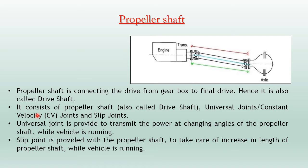It consists of the propeller shaft (drive shaft), universal joints, constant velocity joints (also called CV joints), and slip joints. Each of these joints has its own purpose. Universal joints are provided to transmit power at changing angles of the propeller shaft while the vehicle is running.